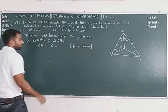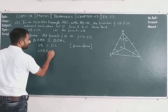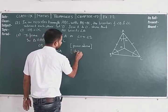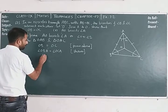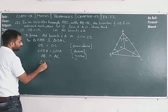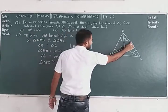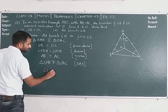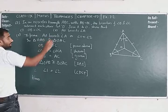It means angle OBA is equal to angle OCA. AB is equal to AC. So therefore triangle OAB is congruent to triangle OAC by Side-Angle-Side criteria. Therefore by CPCT, angle 1 is equal to angle 2. Hence AO bisects angle A.